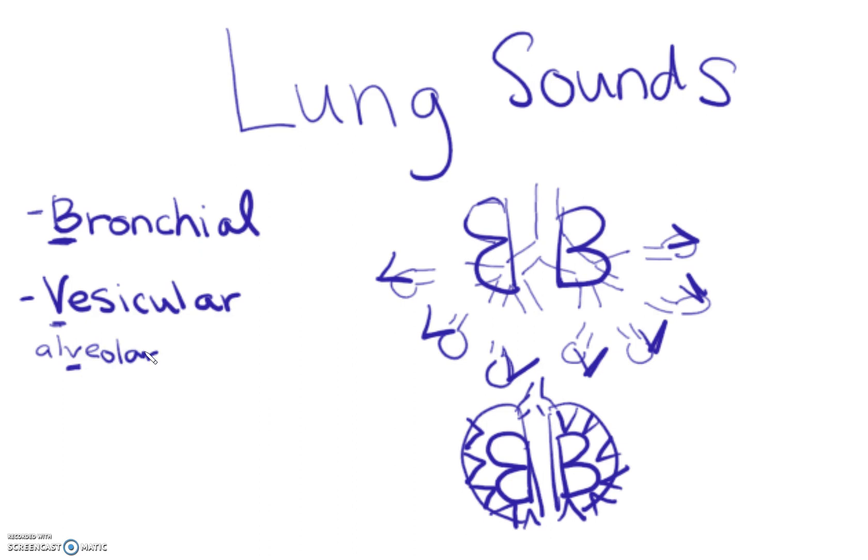The bronchial sounds are around your bronchi and bronchioles, and vesicular sounds, the V, are around your alveoli. In general, you just chart diminished or absent breath sounds in a certain area. You don't necessarily say diminished vesicular sounds. You chart diminished, absent, or normal breath sounds, and you mean vesicular or bronchial depending on where you're listening.